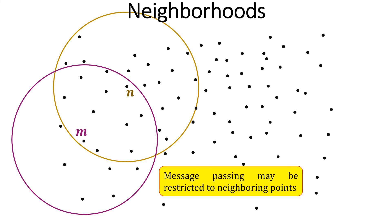Message passing may be restricted to mutually neighboring points. So there can be message passing between m and n since each of them is in the other's neighborhood.